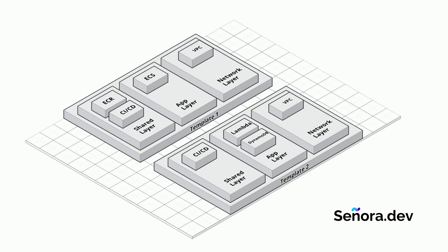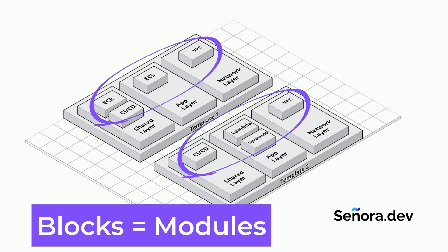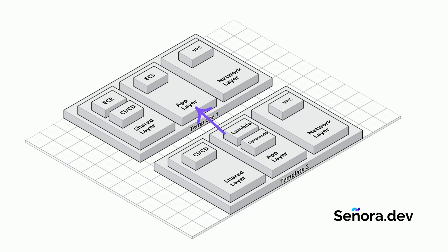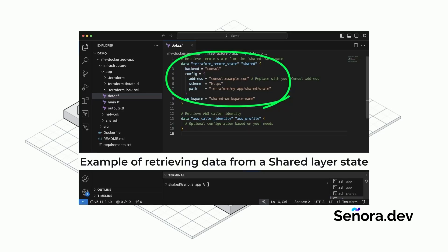Let's demo it. Here we see a basic diagram of two templates — one for an ECS application and one for a serverless application. Each template contains blocks associated with specific layers: shared, app, and network. The app layer is the one I will be making available to developers as a self-serve option. This layer will contain application resources that developers can edit, add to, or remove from. All workspaces in this layer will have access to the information exposed by the other layers — shared and network — specifically the outputs of their states.